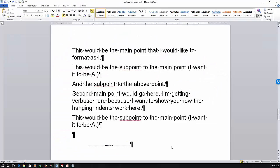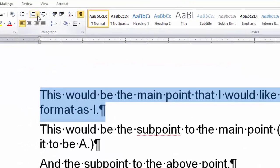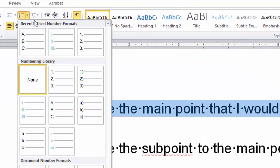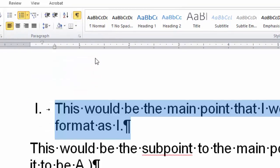Here we are in a document. If I want this to be a main point, formatting it as Roman numeral 1, I can highlight this paragraph, come up to the numbered list one, and choose the number format that shows Roman numeral 1.